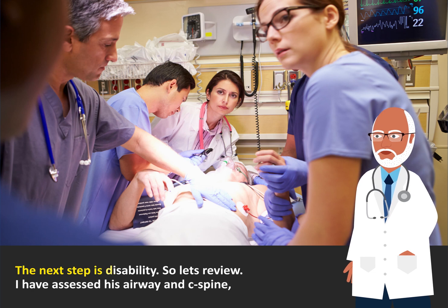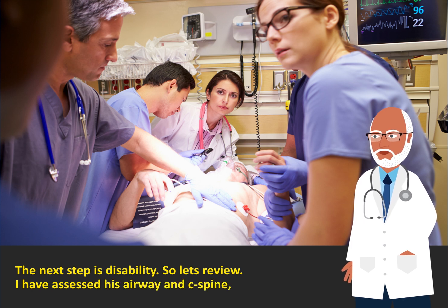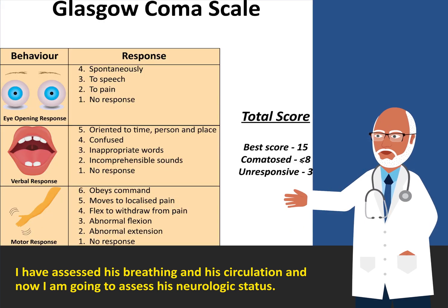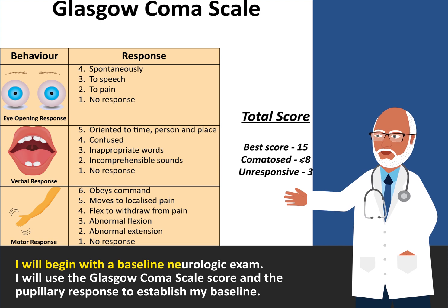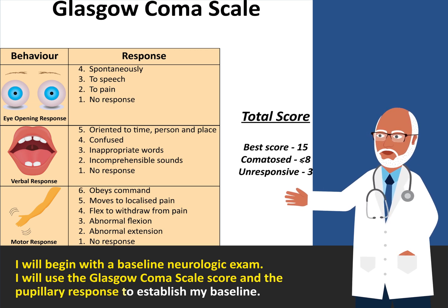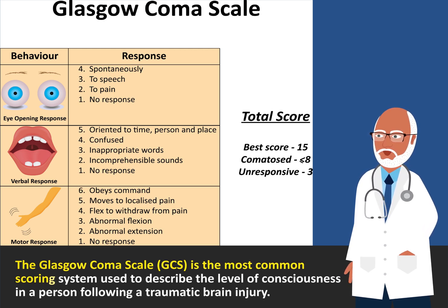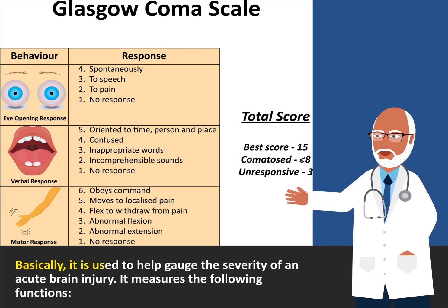The next step is disability. I have assessed his airway and C-spine, his breathing, and his circulation. Now I am going to assess his neurologic status — this falls under disability. I will begin with a baseline neurologic exam, using the Glasgow Coma Scale score and the pupillary response to establish my baseline. The Glasgow Coma Scale is the most common scoring system used to describe the level of consciousness following a traumatic brain injury, and is used to gauge the severity of an acute brain injury.